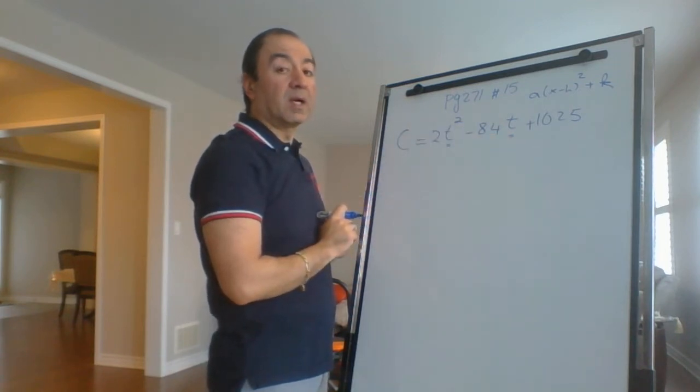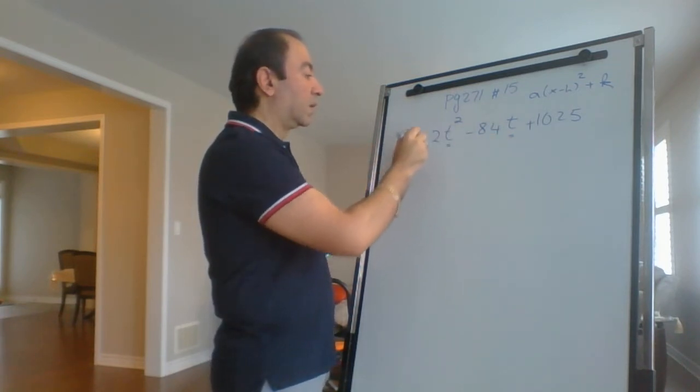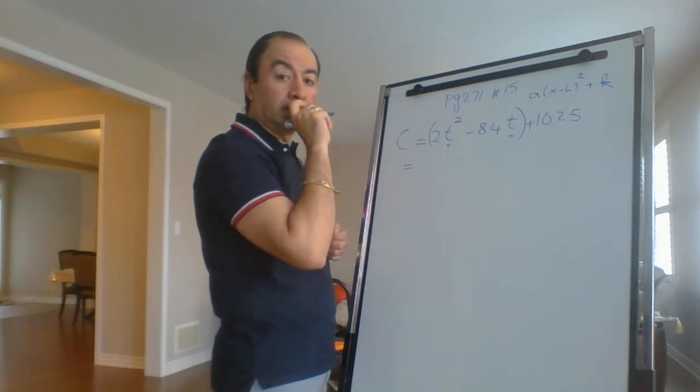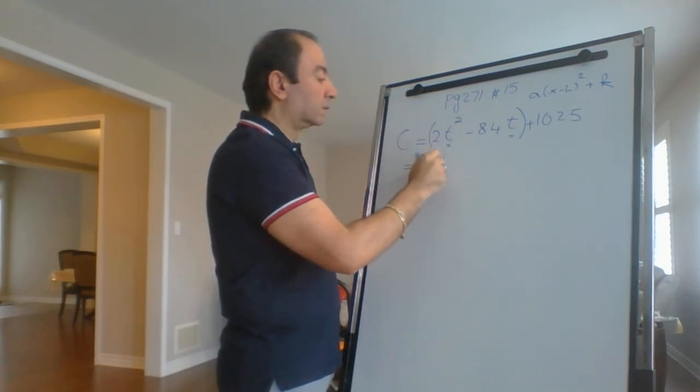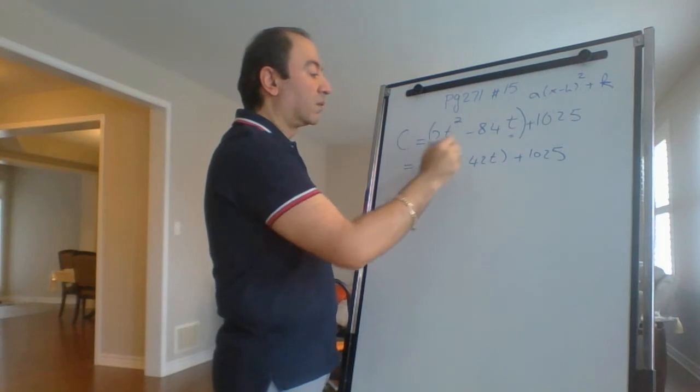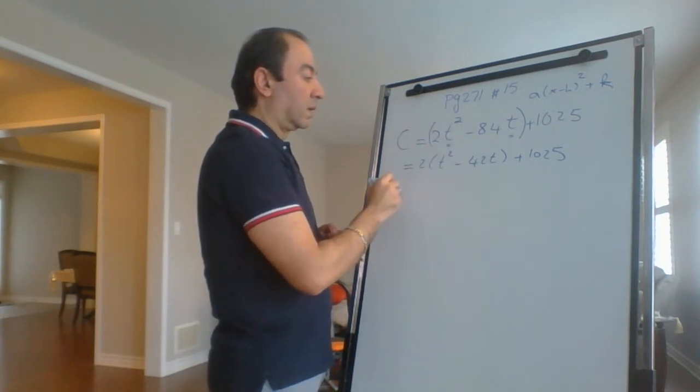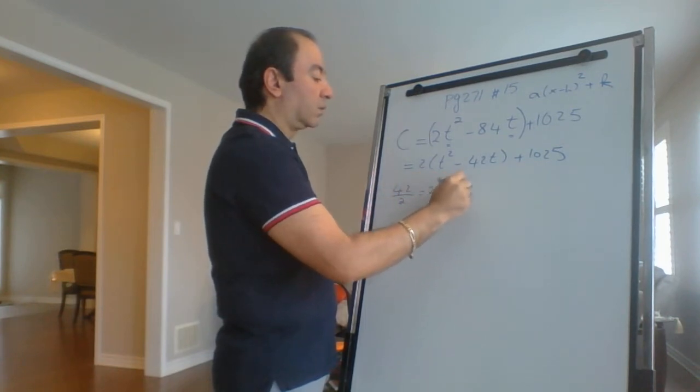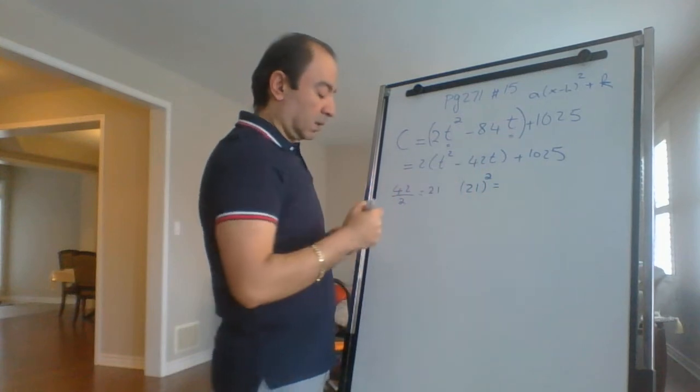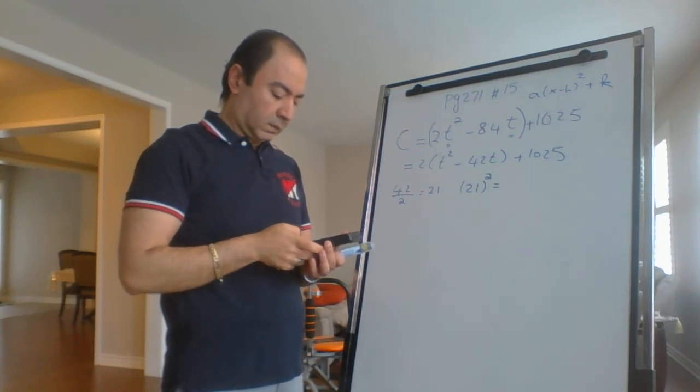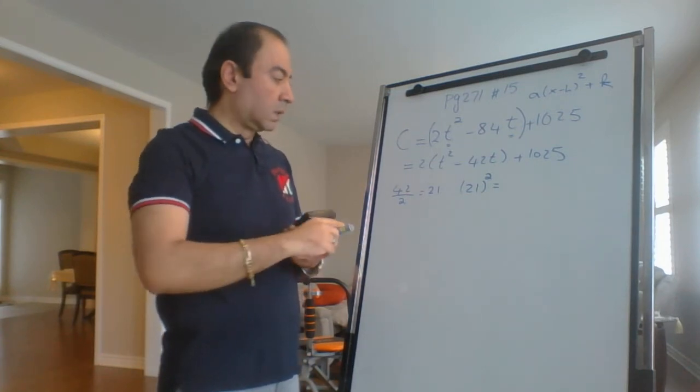K will be the minimum and h will be how many hours we use the machine to minimize the cost. As usual, we group the first and second terms, then factor a out. Then we get the number in front of T, which is 42, divide it by 2—that's 21—and we're going to square this 21. 21 squared, that's 441.